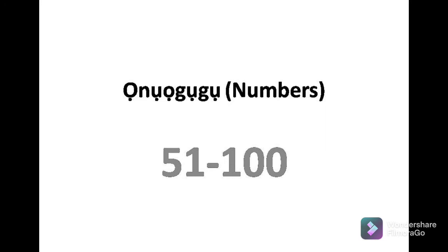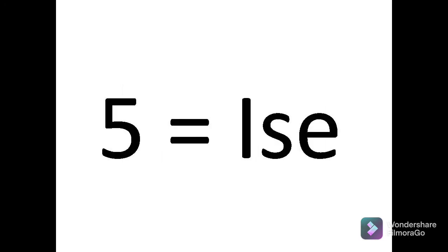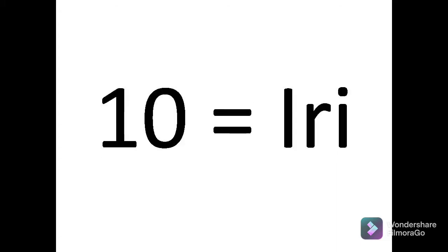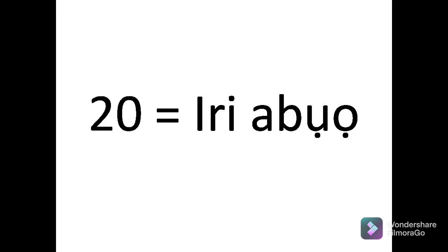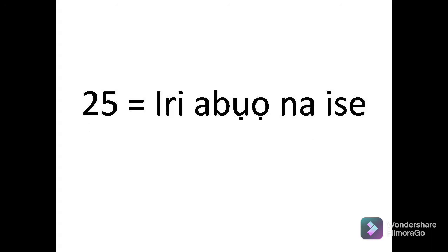Remember, in the last class I said: 5 is Isse, 10 is Iri, 15 is Iri na isse, 20 is Iri abo, 25 is Iri abo na isse. 25 is Iri abo ni isse.